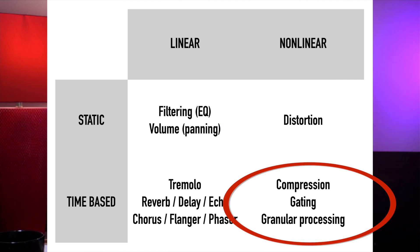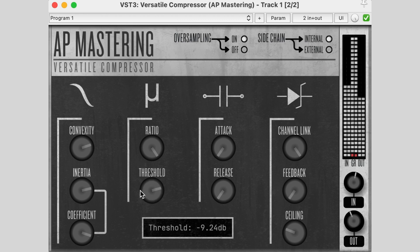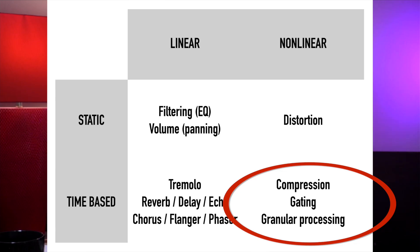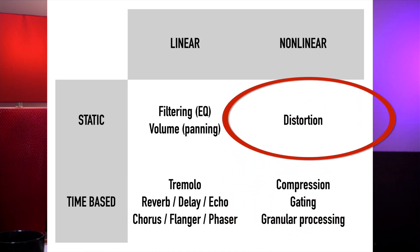A compressor also works in a non-linear way, reducing the level when the threshold is exceeded, but its most important feature is time — the attack and release knobs. But if you turn both the attack and release to maximum speed, you start to hear distortion. That's because if you remove the time aspect of a compressor by making the attack and release zero, you've now got a distortion unit. In the most extreme case, it becomes a clipper.